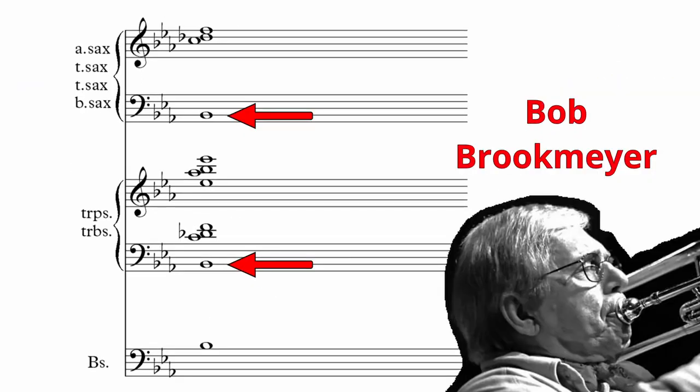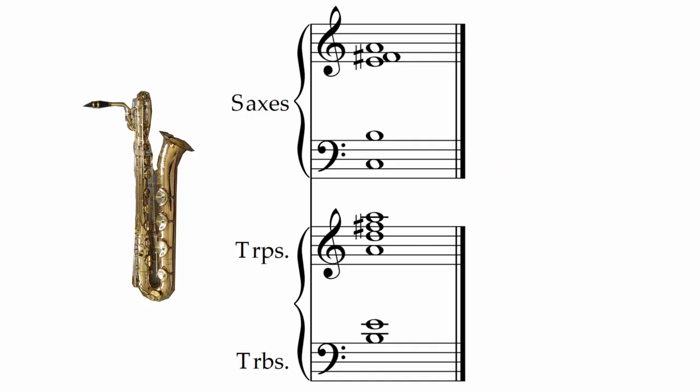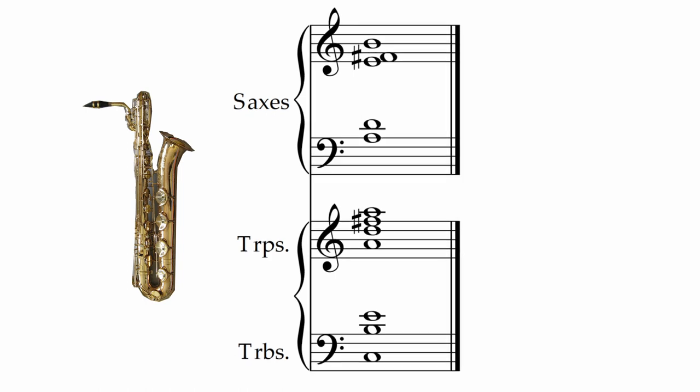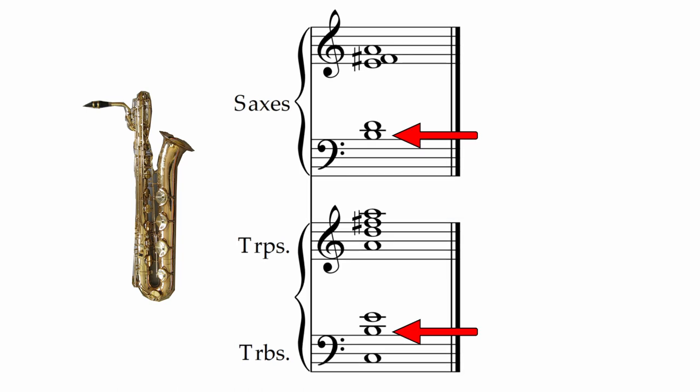I think one thing to consider in the decision is that the baritone sax can get lost in the middle of a tutti big band chord. When it is nice and low, its grunty, pointed sound can be heard. If it is placed higher, it can be a good idea for the baritone sax to double the melody an octave or two below, or double another part.